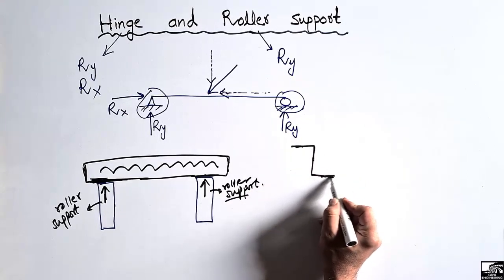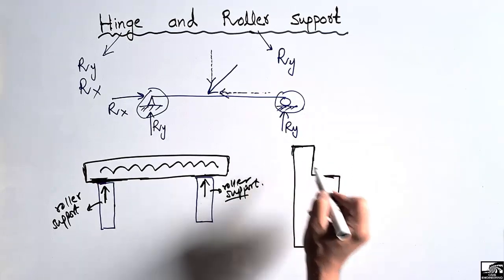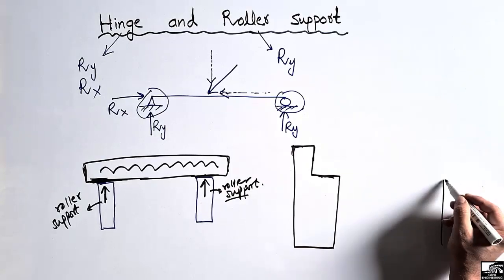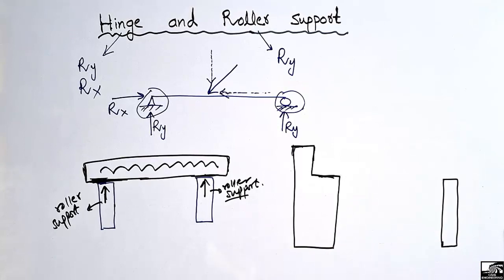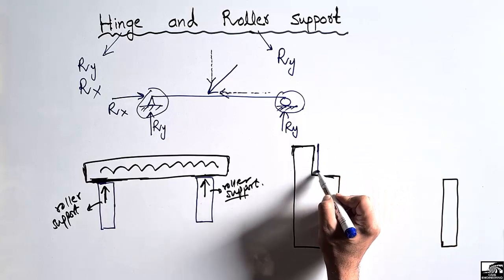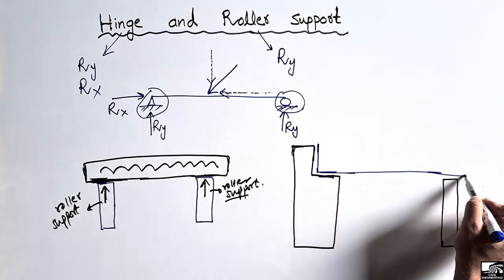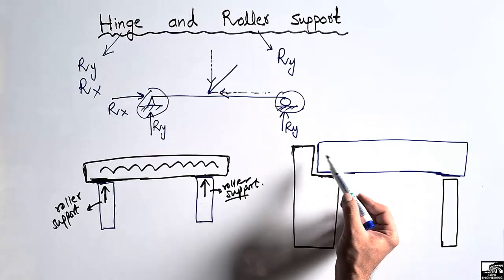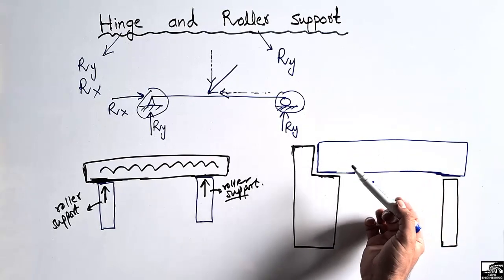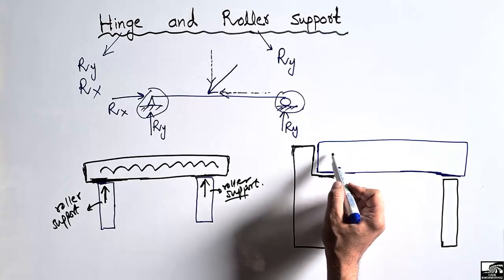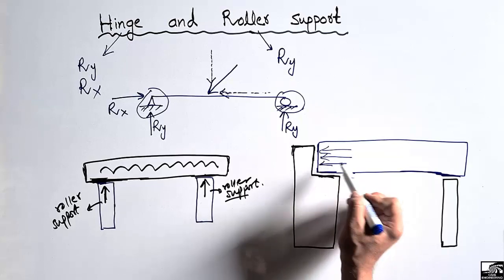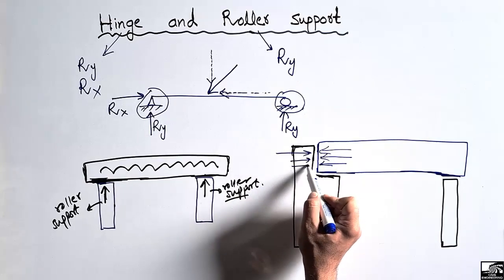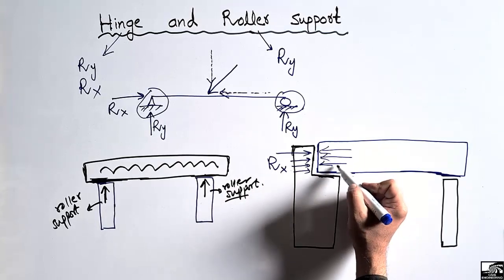Now where can we find the hinge support? Let's consider another example. This is a column and here is another column, and between these two columns we place a girder or beam. Now we can see here that there may be a horizontal load coming on this beam — perhaps wind load or earthquake load. This horizontal load on the beam will be transferred to one of these columns, and that column will be able to take this horizontal load, so the horizontal reaction Rx will be provided by that column.